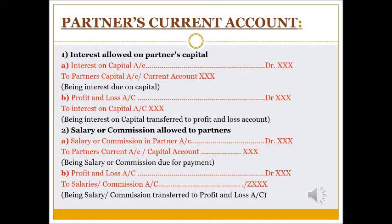The journal entries for Partners Current Account: For interest allowed on partners capital — Interest on Capital Account debit to Partners Capital or Current Account — giving effect on the credit side. The second effect is: Profit and Loss Account debit to Interest on Capital Account. So one effect is on the Partners Capital Account credit side and the second effect is on the Profit and Loss Account debit side.